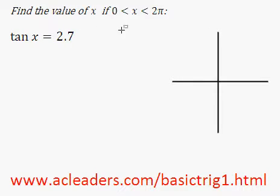Let's get started and find some values of x, given that x is between 0 and 2π. So we want to find x in terms of radians. And so we have tangent of x is equal to positive 2.7.